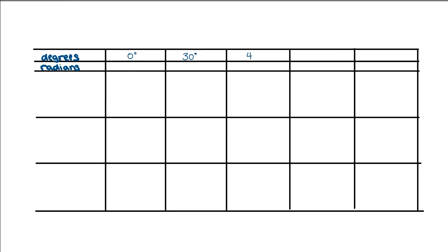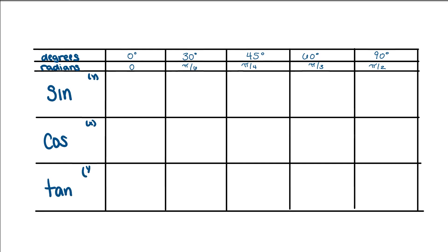We have our degree and radian values listed on top — our major points: 0, 30, 45, 60, and 90. And then the corresponding radians: 0, pi/6, pi/4, pi/3, and pi/2. Then we list sine first, which corresponds to Y; cosine, which corresponds to X; and tangent, which is Y over X.